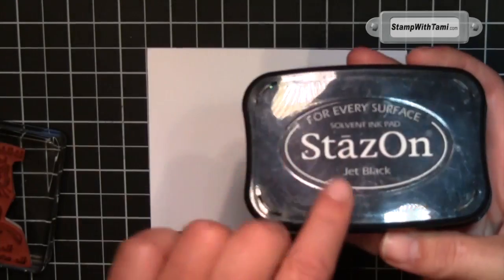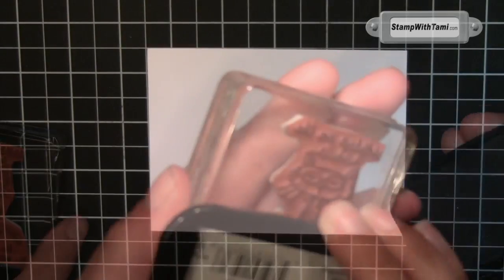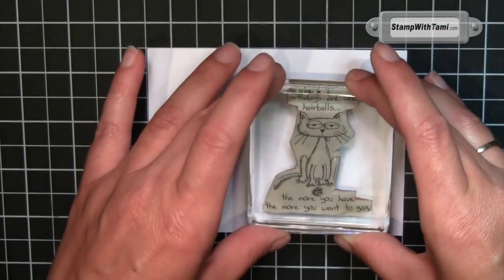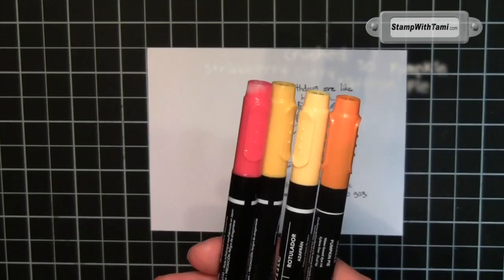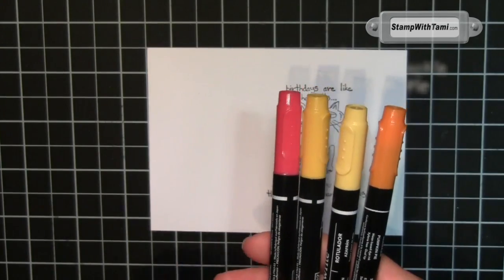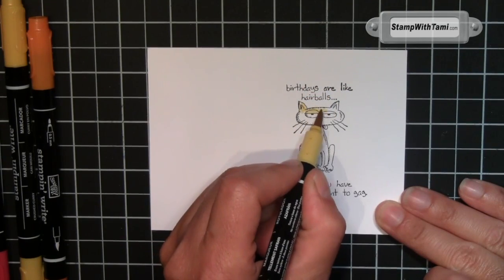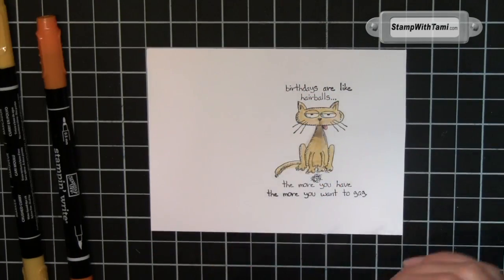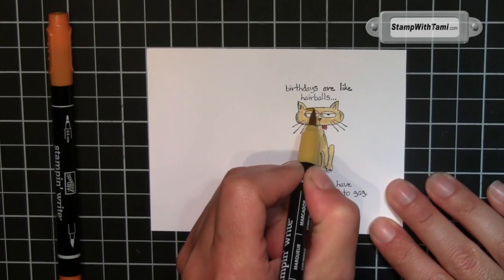I'm starting with some StazOn black ink and we'll ink that cat image right up. I've got it on the right-hand side towards the center. The colors of the Stampin' Write markers I'm using: we're going to color kitty in with the lightest yellow, So Saffron, little Strawberry on his tongue.